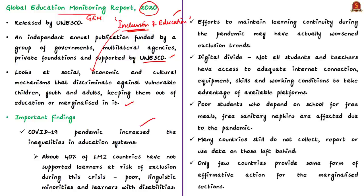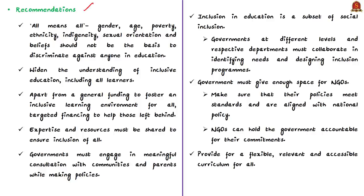Major findings of this report include: many countries still do not collect, report, or use data on children who are left behind; and only a few countries provide some form of affirmative action for marginalized sections. The report suggests that teachers, teaching materials, and learning environments should be provided to embrace diversity — accepting students with special needs, third gender, etc. The report's message is 'all means all' — meaning gender, age, poverty, ethnicity, sexual orientation, etc. should not be the basis to discriminate against anyone in education. The report recommends widening the understanding of inclusive education to include all learners, and apart from general funding, it recommends targeted funding to help children who are left behind.